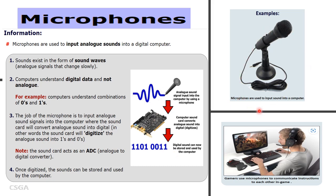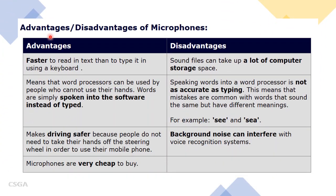Examples of microphones. Advantages and disadvantages of microphones. Advantages: faster, as words can be spoken into the software instead of typed; makes driving safer; and microphones are very cheap. Disadvantages: audio files require a lot of computer storage; not as accurate as typing; and background noise can interfere.